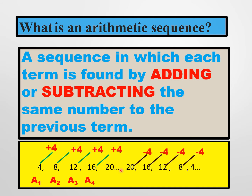Another example: we can also have the sequence 20, 16, 12, 8, and 4. In this sequence, we just subtract 4 from the first term to get the second term, and subtract 4 from the second term to get the third term.